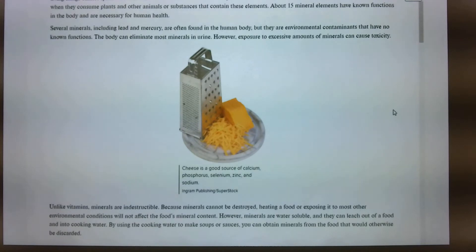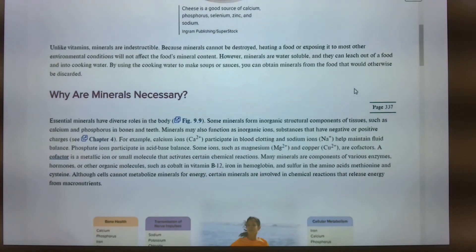Several minerals, including lead and mercury, are often found in the human body, but they are environmental contaminants that have no known functions. Lead poisoning happens. Lead often happens in water sources, so we can monitor those. Mercury. How many of you remember the thermometers that had mercury in them? We have no idea how dangerous those were. Mercury is stored in the brain, which is another reason why we tell moms to stay away from the wild-caught ocean fish because that mercury can be stored inside the brain and the fetus and cause some developmental delays later on and after birth. About 15 minerals, so iron, calcium, lead, mercury. Unlike vitamins, minerals are indestructible. These are the superheroes, except superheroes have weaknesses, but minerals do not have weaknesses. Because minerals cannot be destroyed, heating your food or exposing it to most other environmental conditions will not affect the food's mineral content.